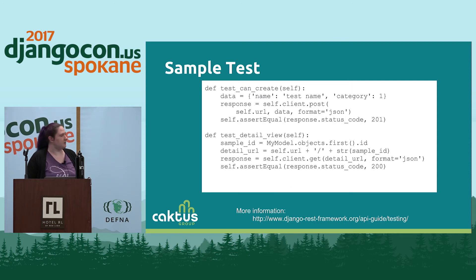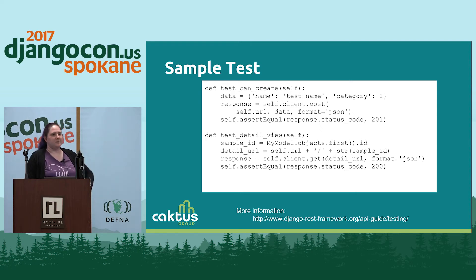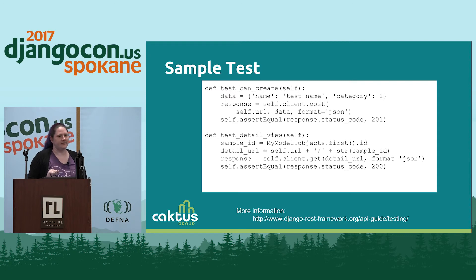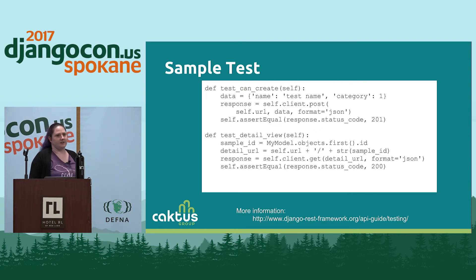A couple more samples. Testing creation is very similar — in that case I'm checking for a 201 response because an object will have been created. And for testing the detail view, I grab one of the objects created in setup, create the detail URL by appending that ID to the base URL, and then do self.client.get at the detail URL and assert a 200 response.